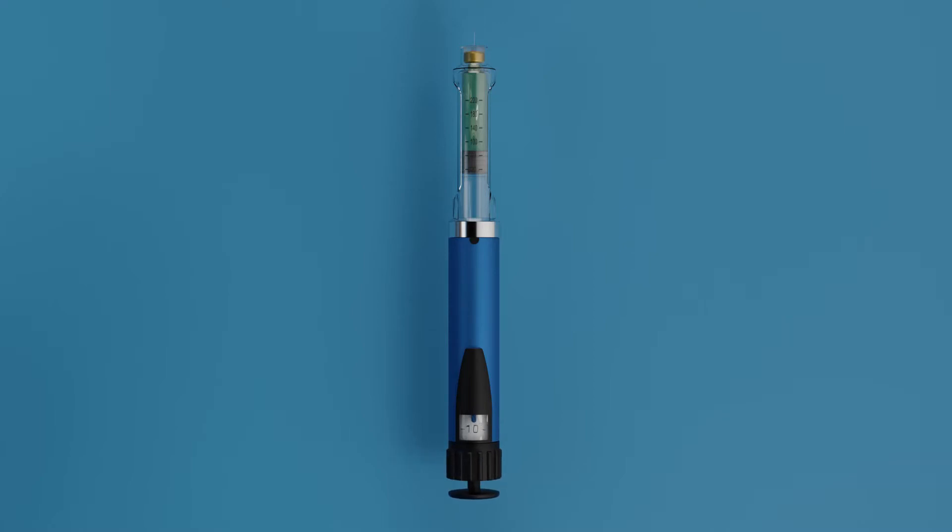Dial and press till the plunger touches the grey rubber stopper of the cartridge. Tap the cartridge holder gently to raise any air bubbles to the top of the cartridge. If there are no air bubbles to be seen, then the pen is ready for use.